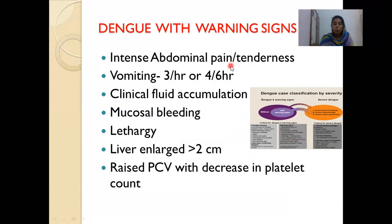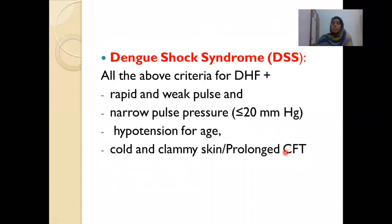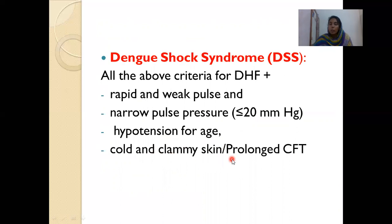Coming to severe dengue — defined as dengue with capillary leakage leading to shock or severe respiratory distress, clinically significant bleed, or severe organ involvement as evidenced by hepatic enzymes AST or ALT more than 1000, myocarditis, or encephalopathy. Dengue shock: all criteria for dengue will be present plus the pulse will be rapid and weak, narrow pulse pressure less than 20 mmHg, hypotension defined as BP less than 5th centile for age, cold clammy skin, or prolonged capillary refill time.